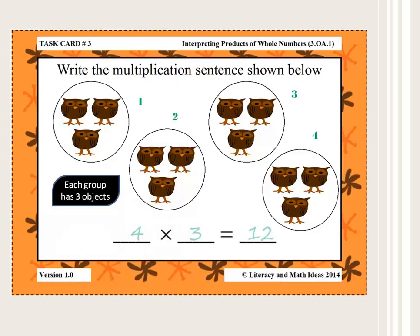So the multiplication sentence is four times three. An alternate and equally correct answer is three times four. This product has several task cards just like this one for students to work through.